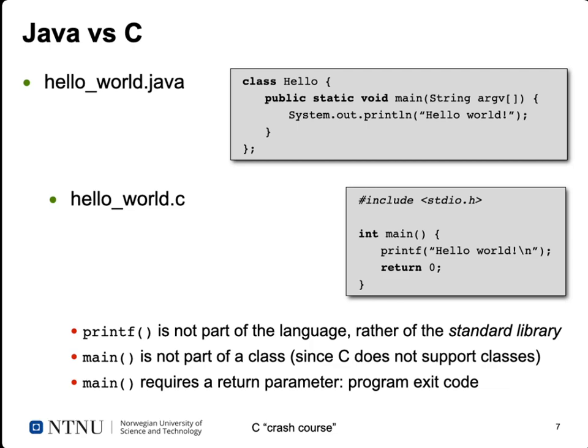Let's start with a comparison of Hello World programs. In Hello World Java, we start with a class named Hello that includes a method: public static void main, which gets an array of strings called args. This function calls System.out.println and passes it the string 'Hello World', which prints it to the screen.